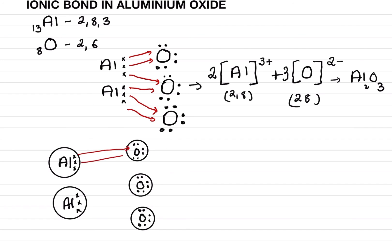One and two electrons go to the first oxygen — it has completed its octet. From the first aluminium, the remaining electron goes to the second oxygen, giving it seven and then eight. The third oxygen gets two more electrons. Each oxygen now has eight electrons, and aluminium is left with the 2, 8 configuration having transferred three electrons. Two aluminiums transfer six electrons total to three oxygens, so each oxygen gets two electrons.